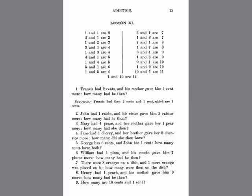That's one of the keys to helping kids avoid math anxiety — right from the beginning they see that math is not a scary subject. It's very down to earth with everyday things involved. Here you see these word problems after the initial table of ones being added to other numbers. The first problem is: 'Francis had two cents, and his mother gave him one cent more. How many had he then?' That's a very simple problem any child can understand — they can picture Francis having two cents and his mother giving him one cent more. The next one: 'John had one raisin, and his sister gave him three raisins more. How many had he then?' These are situations the child can picture in their mind and relate to, and the math just naturally happens as you work through these story problems.